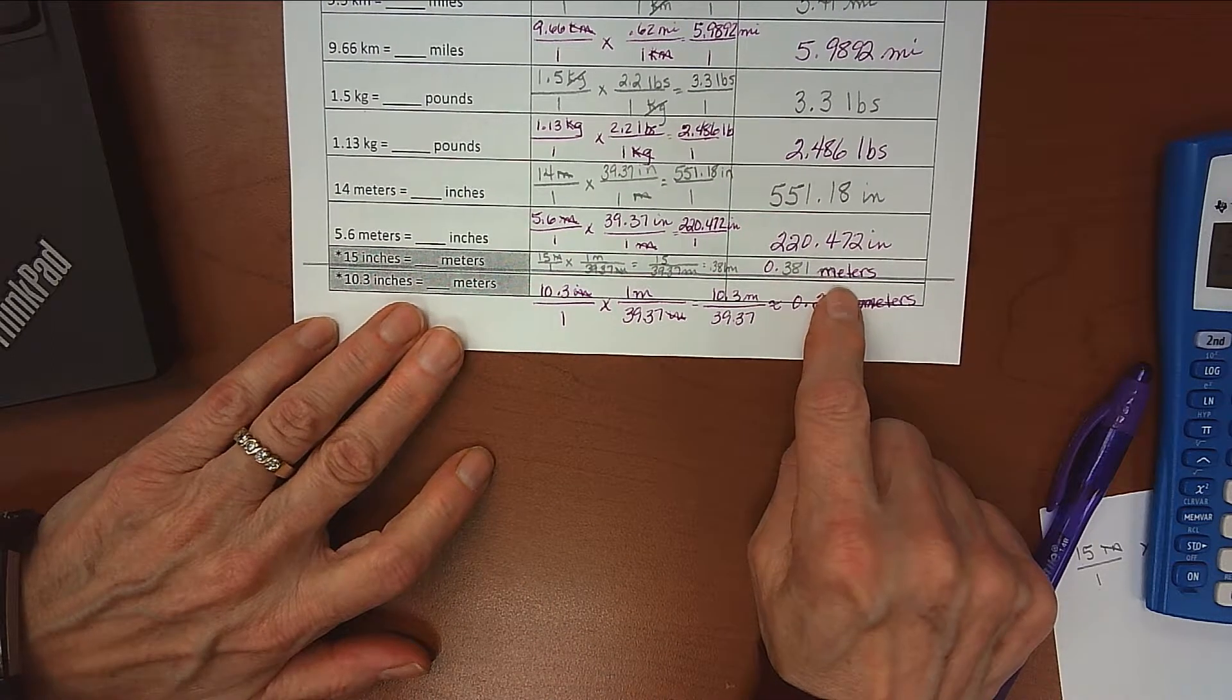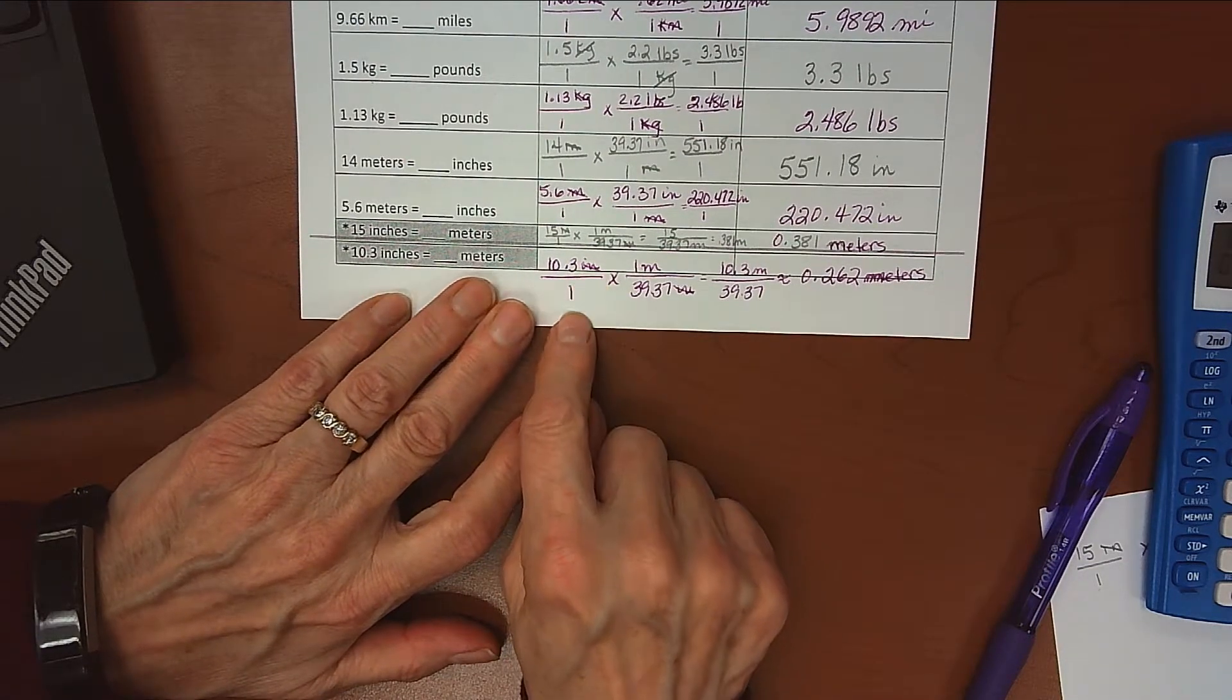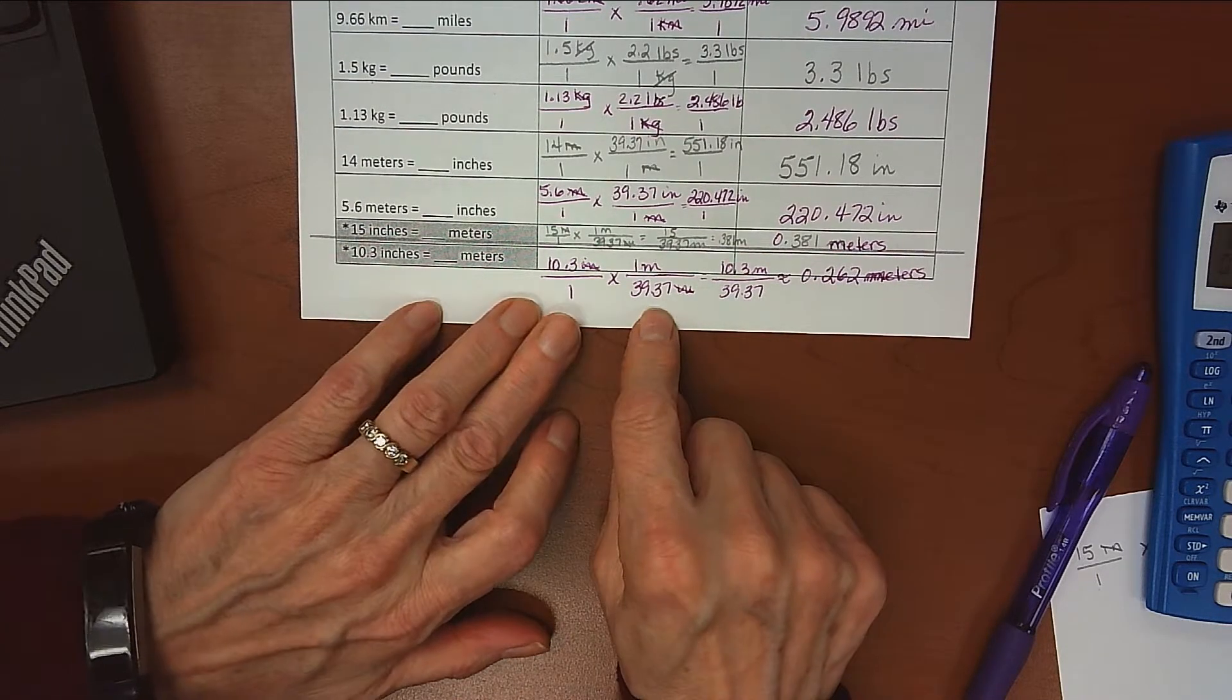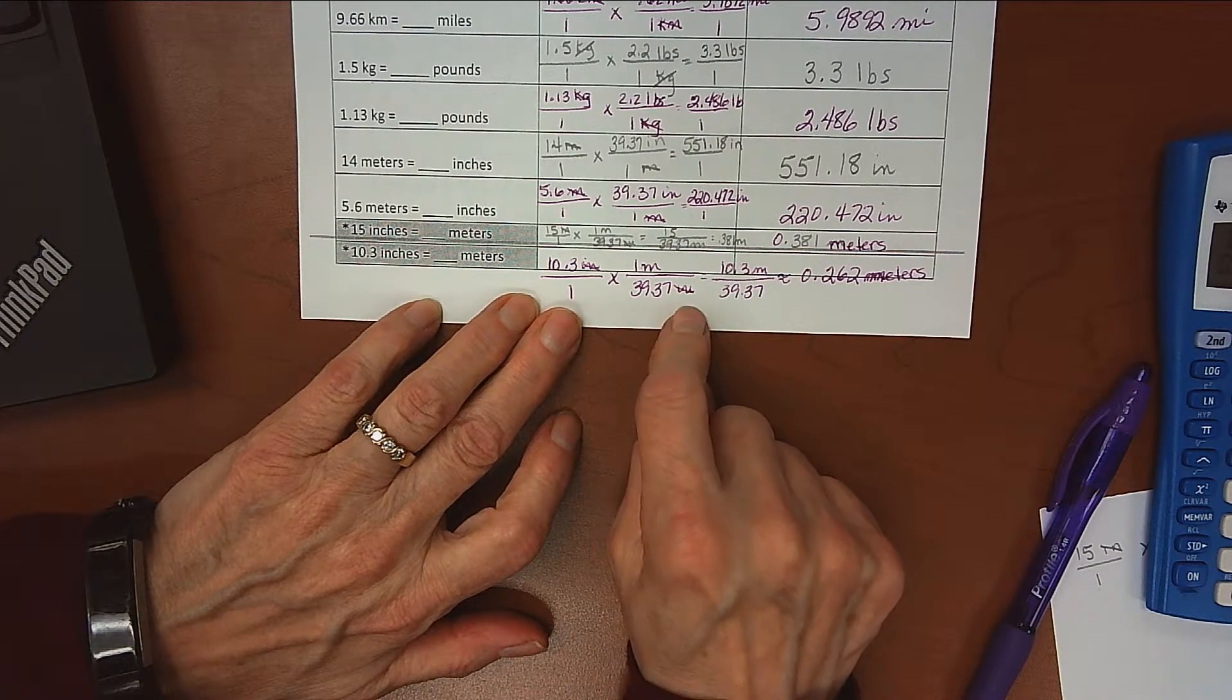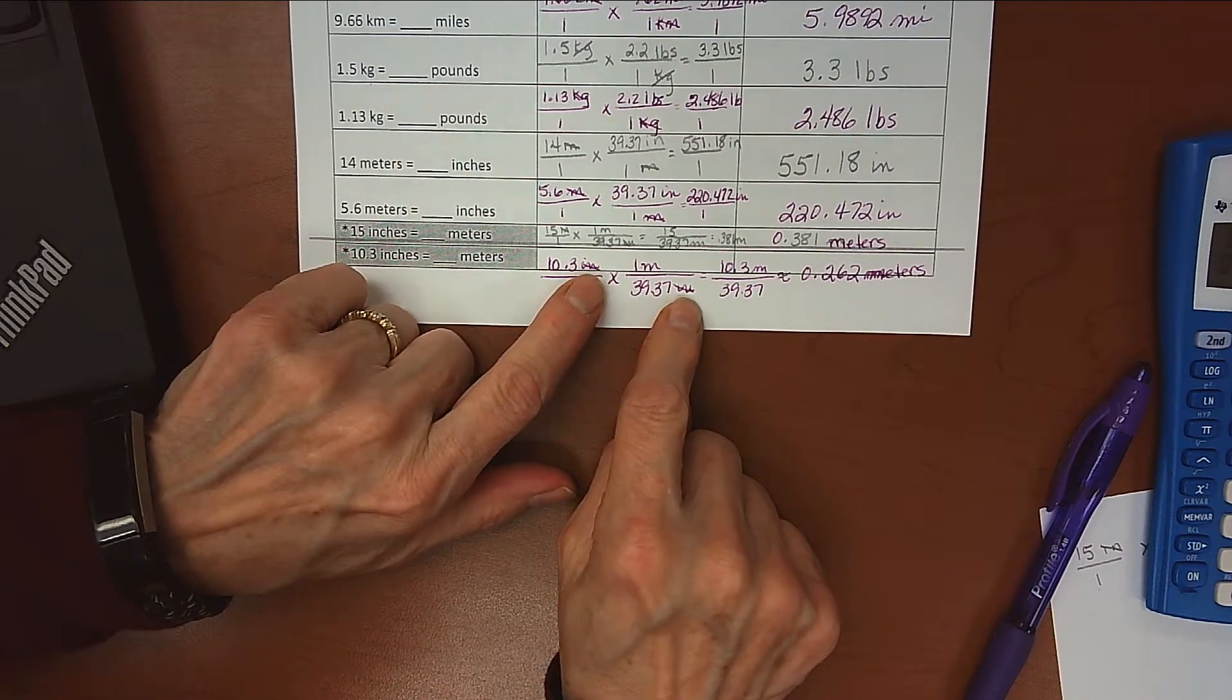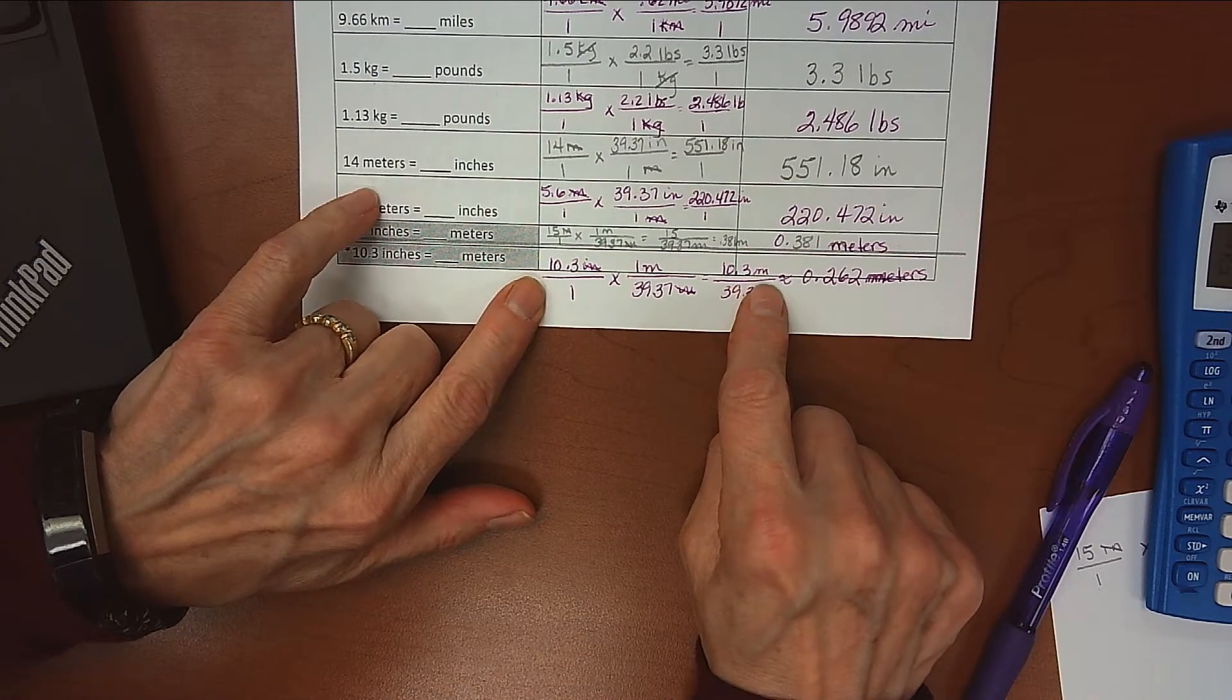This is the one we did. I just put in the word 'meters' so you wouldn't confuse that with miles. This one was the hardest. I've got 10.3 inches, I made that a fraction over 1. The conversion factor that I know is that 1 meter is 39.37 inches. The inches need to be opposite each other so those cancel out when I multiply 10.3 times 1 meter I get 10.3 meters.